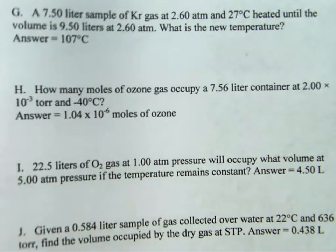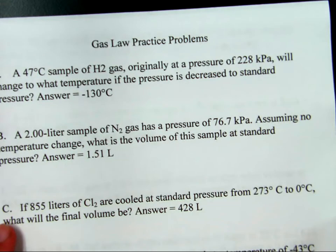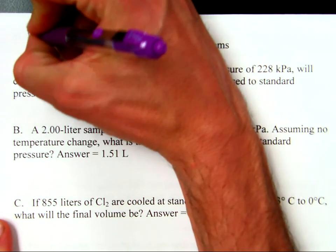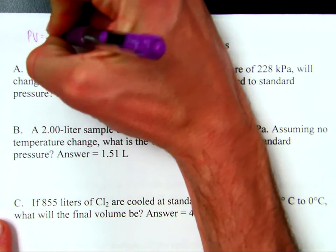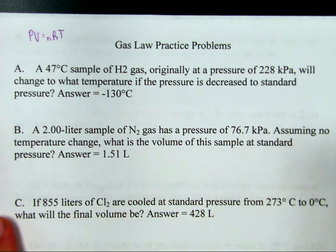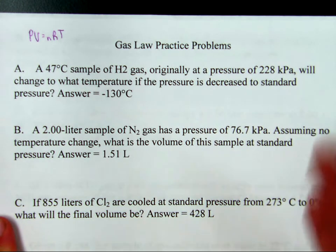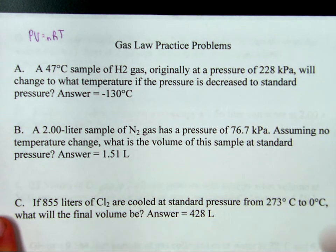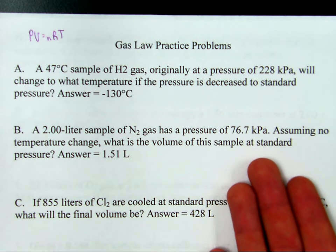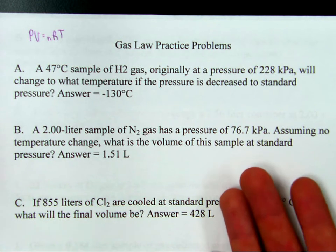If you have no changing conditions at all, the gas law you will use is the only one given to you on the exam — the ideal gas law: PV = NRT. That is really the mother of all the other gas equations; all the others can be derived from it. That said, it's good to know the others and have them handy because it allows you to work quicker on an exam, which is important to finishing in time.